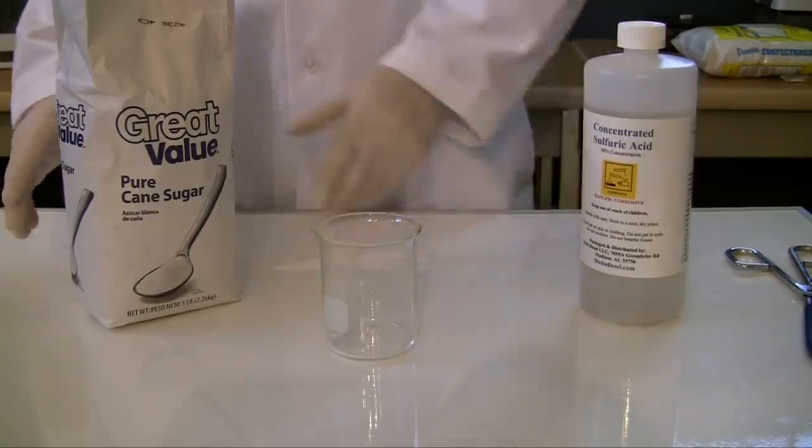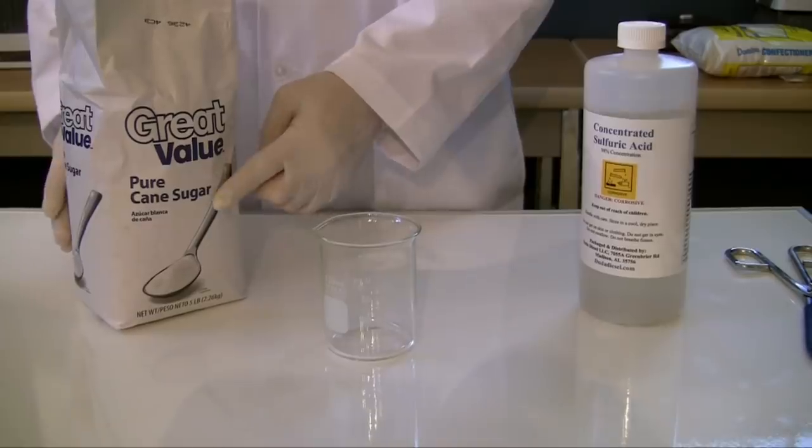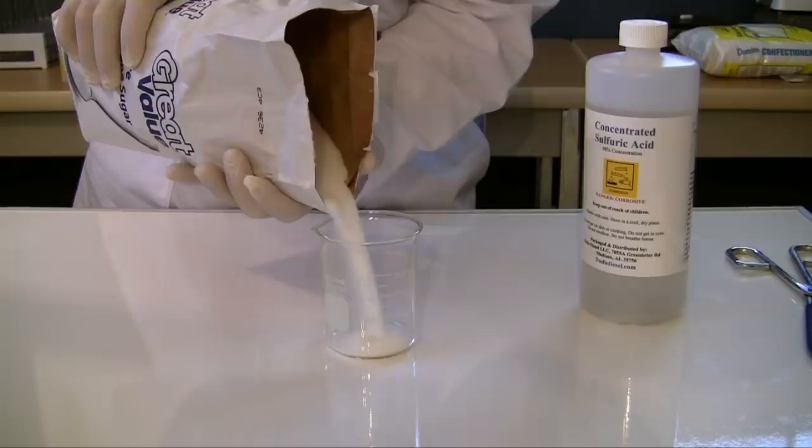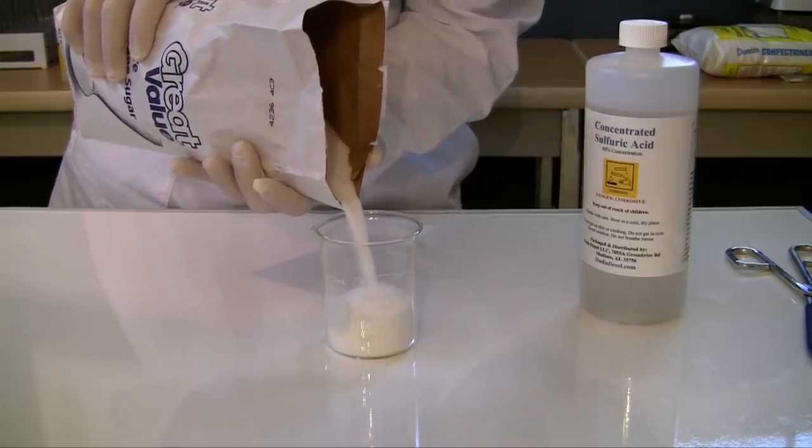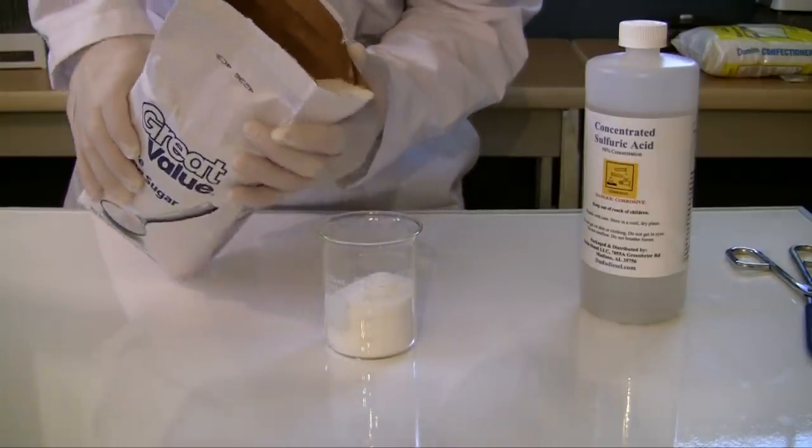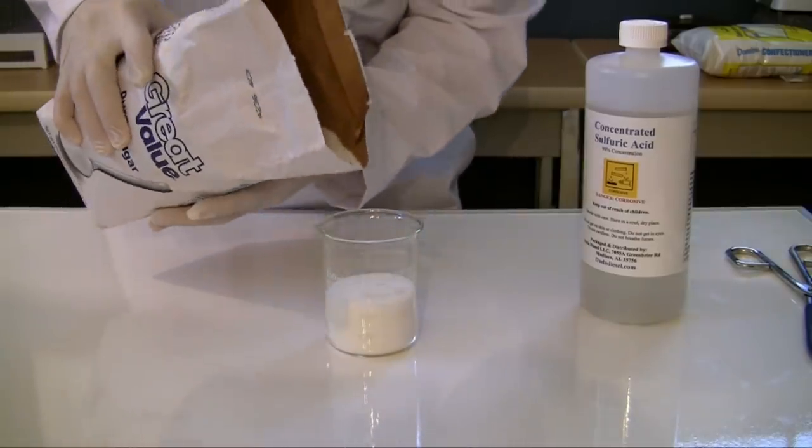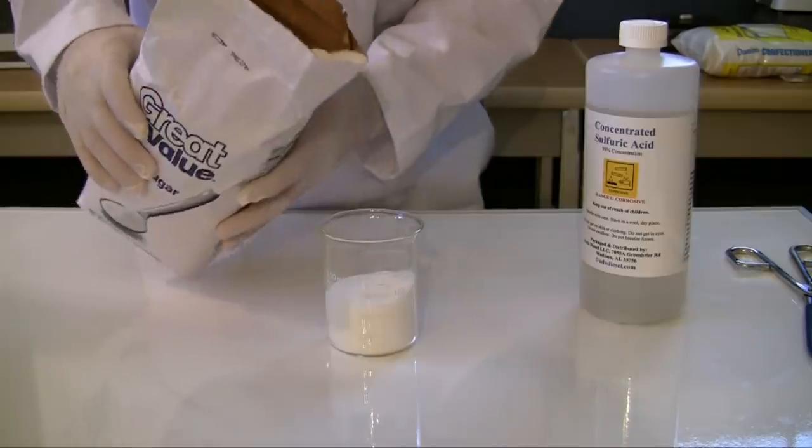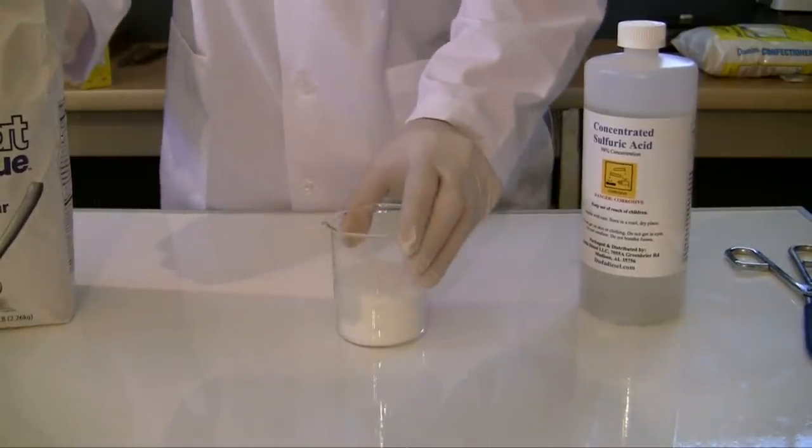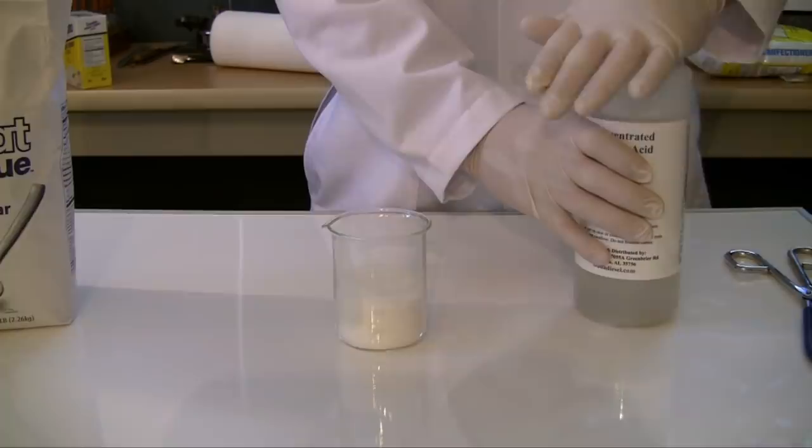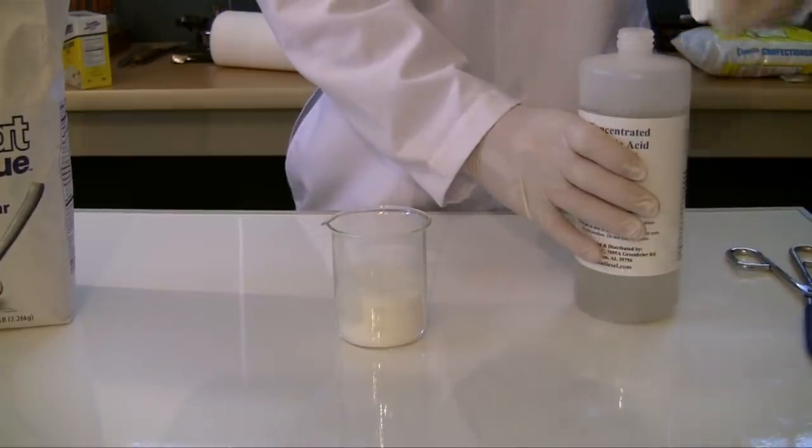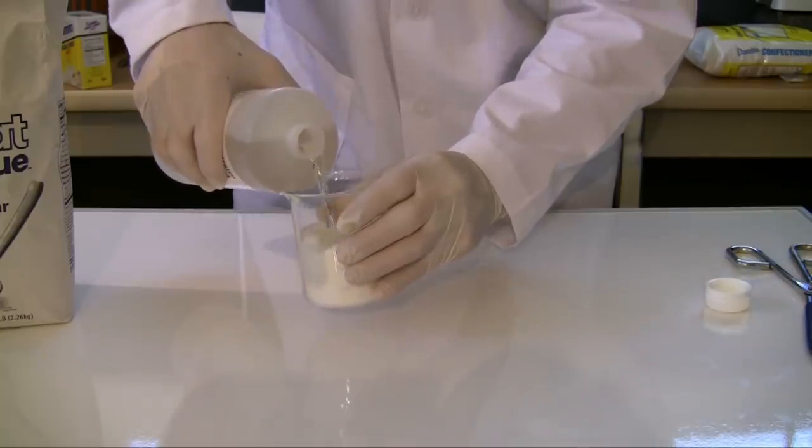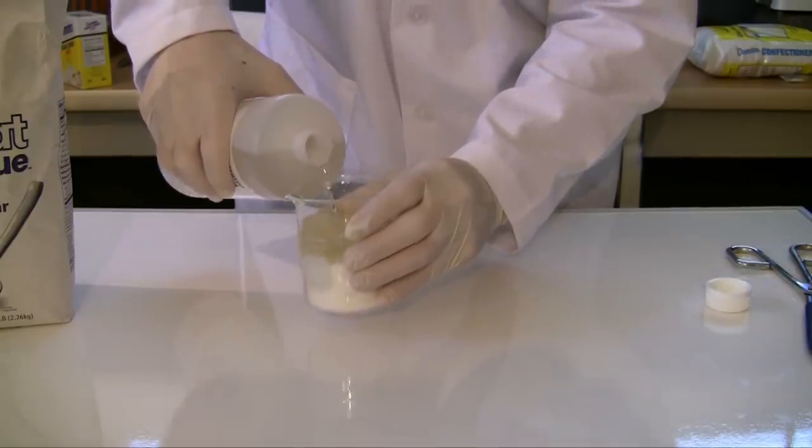Now for the first experiment, I'm just going to be using basic table sugar. This is pretty much the kind of sugar that you put in your coffee. I have a 250 milliliter beaker, and I'm going to fill it up about half full, right around 125 milliliter, and that's probably good. Make sure that's all even, and then you can go ahead and carefully add the sulfuric acid.